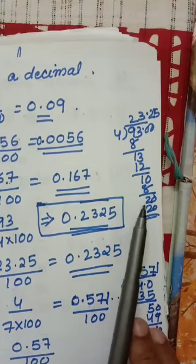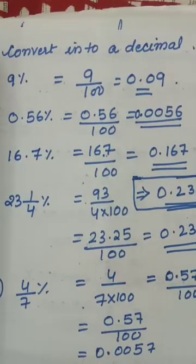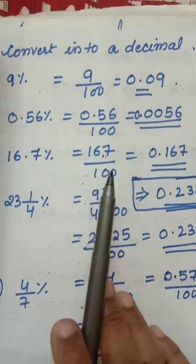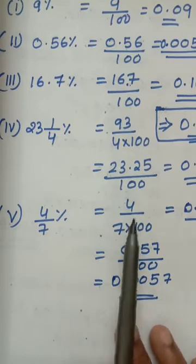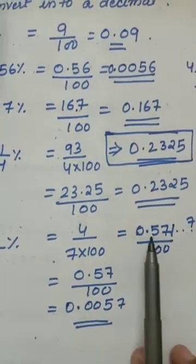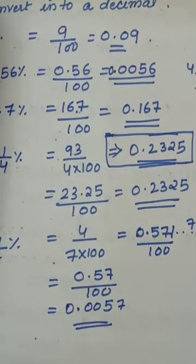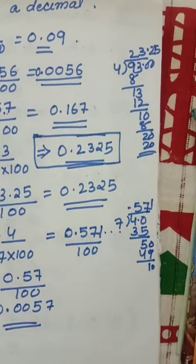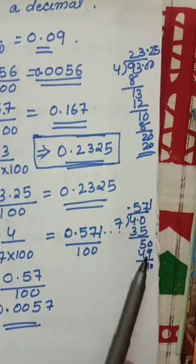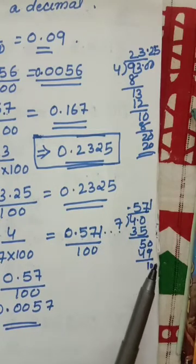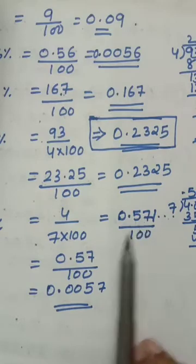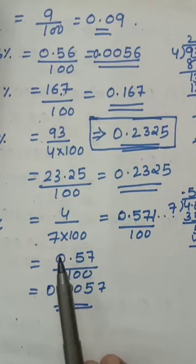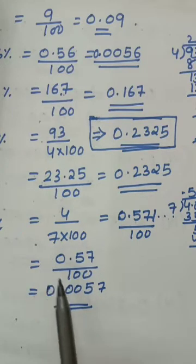You can see how I divided: 93 divided by 4. You can divide also. You know 100 means 2 digits — before that put a point. 4 by 7 percentage: 4 by 7 multiplied by 100 gives 4 by 700, which is 0.57 divided by 100. I divided 4 by 7 and got 0.57. Not terminating, so I took 3 digits after decimal. When dividing by 100, take 2 digits before the decimal and put a point.